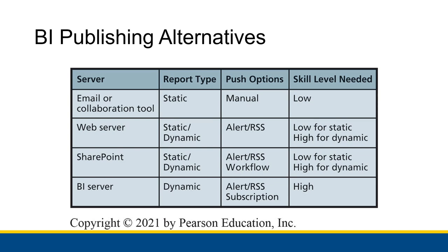A collaboration tool is something like OneDrive or Office 365, and also Google Drive. When talking about email, that's just emailing your document to everyone, as opposed to putting it on a OneDrive or something like that. This really only works with static reports: you create a report, send it out to everyone, and when everything updates you create a new report and send it out again. It's manual, meaning you have to specifically send out your report to everyone. The skill level needed is very low because it's easy to upload a document to OneDrive.